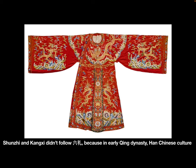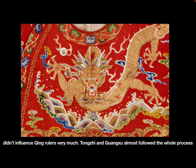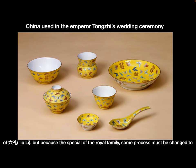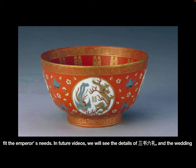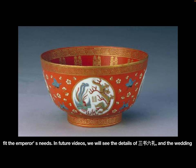Shunzhi and Kangxi didn't follow Liu Li because in early Qing Dynasty, Han Chinese culture didn't influence Qing rulers very much. Tongzhi and Guangxu almost followed the whole process of Liu Li, but because of the special nature of the royal family, some steps must be changed to fit the emperor's needs. In future videos, we will see the details of San Shu Liu Li and the wedding process of Emperor Guangxu.